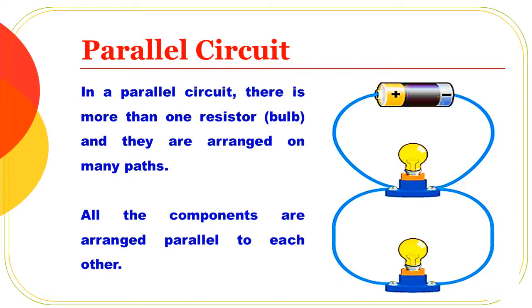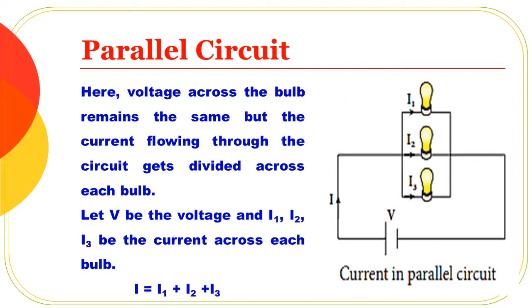In a parallel circuit, there is more than one resistor and they are arranged in many paths. The voltage across each bulb is the same. However, the current flowing through the circuit gets divided across each bulb. The total current I is equal to I1 plus I2 plus I3.